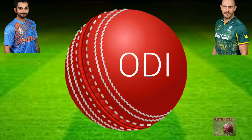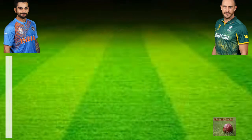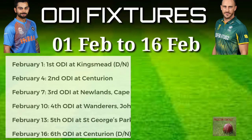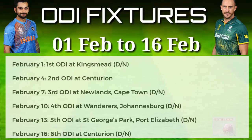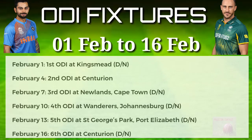Now we will move to the ODI schedule. The 1st ODI will be played on 1st February at Kingsmead. 2nd ODI, 4th February, Centurion. 3rd ODI, 7th February, Newlands Cape Town. 4th ODI, 10th February, Wanderers Johannesburg. 5th ODI, 13th February, Port Elizabeth. And 6th ODI, 16th February, Centurion.